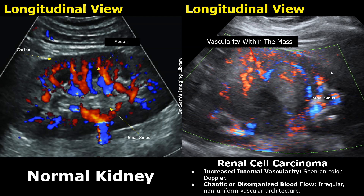Here is another renal mass with strong internal vascularity seen on color Doppler. This is the kidney — the renal sinus is over here, and it is disrupted by the mass. Color Doppler signals are present within the mass. This was later diagnosed as renal cell carcinoma.